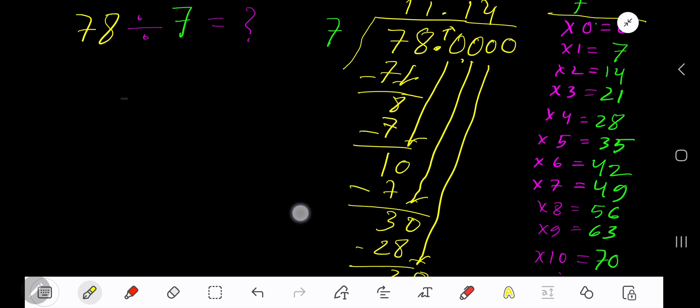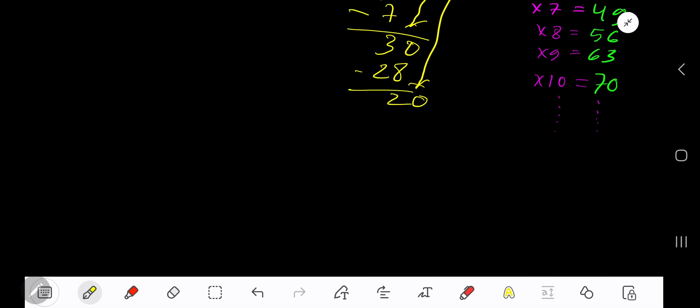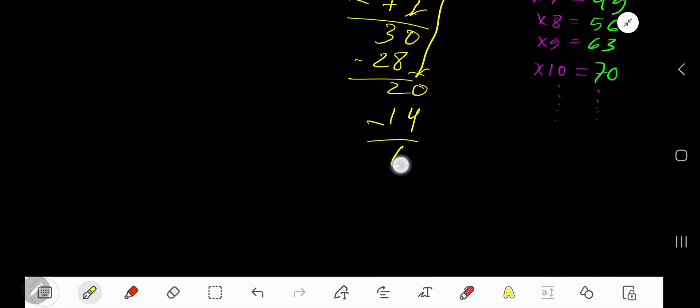7 goes into 20 how many times? 3 times 7 is 21, which is greater, so 2 times. 2 times 7 gives you 14. Subtract: 6.